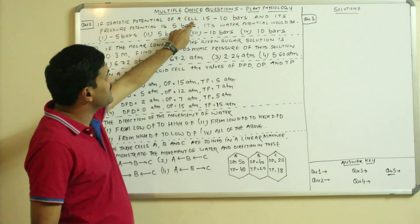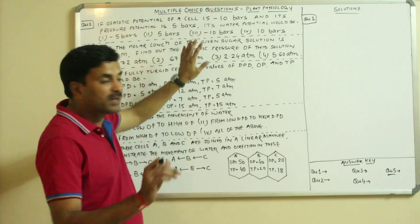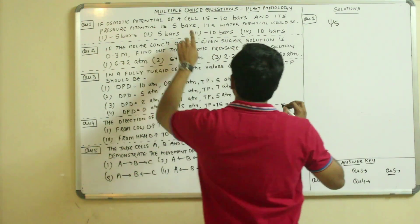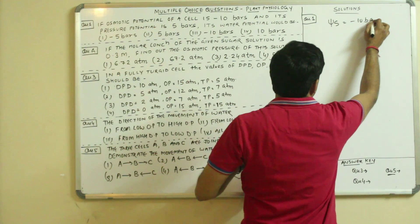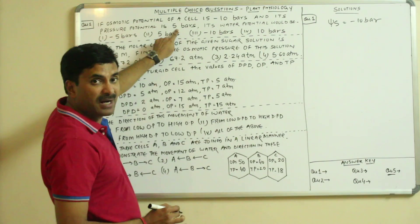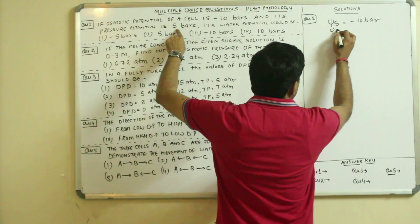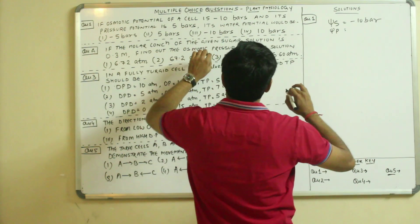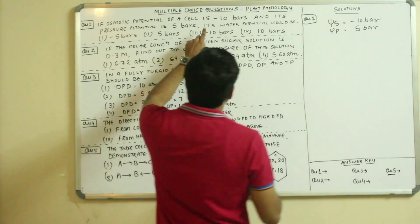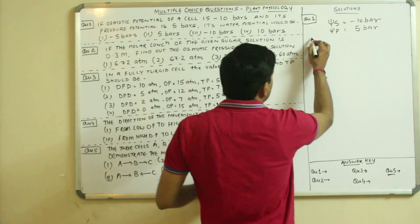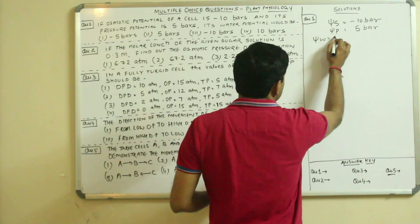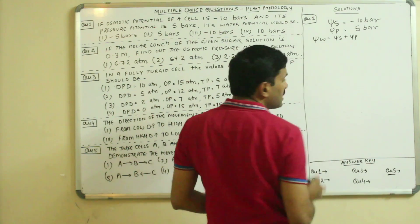The very first question: if the osmotic potential of a cell is minus 10 bar — osmotic potential is ψs — so ψs is minus 10 bar, and its pressure potential ψp is 5 bar. To find water potential, the formula is ψw = ψs + ψp.